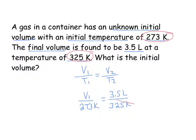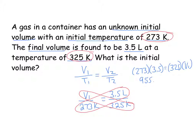The next thing I'm going to do is cross-multiply. I'm going to cross-multiply and then solve for my unknown. So it's going to be 273 times 3.5 is equal to 325 times V1. 273 times 3.5 is 955.5, which is equal to 325 times V1. Then I'm going to divide both sides by 325.